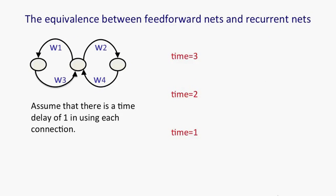So the diagram shows a simple recurrent net with three interconnected neurons. We're going to assume there's a time delay of one in using each of those connections and that the network runs in discrete time, so there's a clock that has integer ticks.